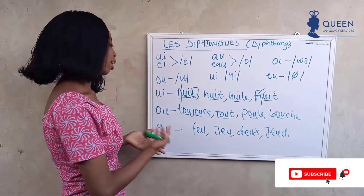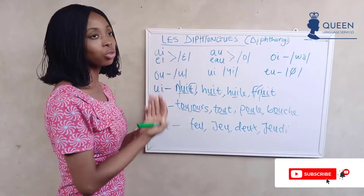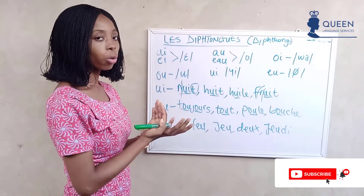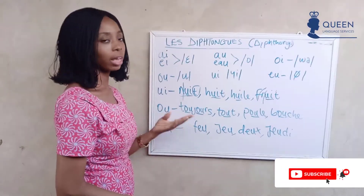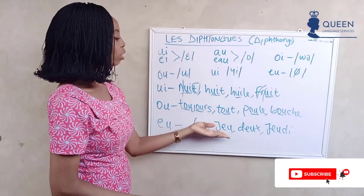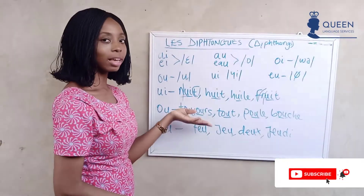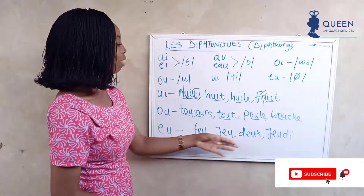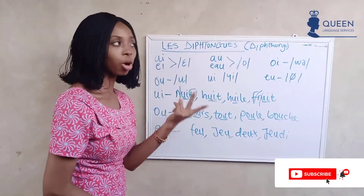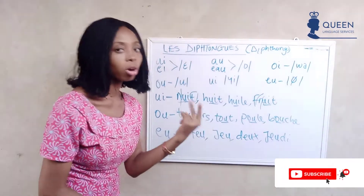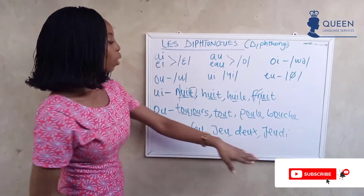When 'e' and 'u' come together in French, they give the sound 'eu'. We have it in words like 'le feu', meaning 'fire', 'le jeu', meaning 'game', and 'deux', meaning 'the number two'.